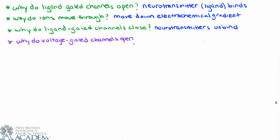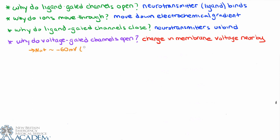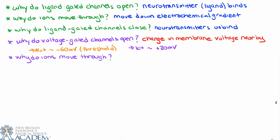Now let's consider the voltage-gated ion channels with the same set of questions. Why do voltage-gated ion channels open? They open because of a change in membrane potential nearby. Whichever voltage-gated channel we're talking about, if in the local membrane we have a change in membrane potential, the voltage-gated channel will open. For sodium channels specifically, they open because we reach threshold potential — minus 60 millivolts — that's the lower limit for sodium channel functioning. Potassium channels are the opposite: they open in response to a very positive membrane potential, opening at plus 30 millivolts.